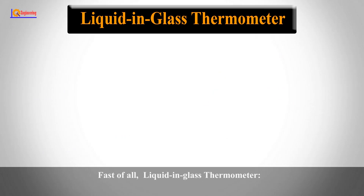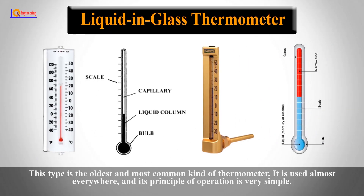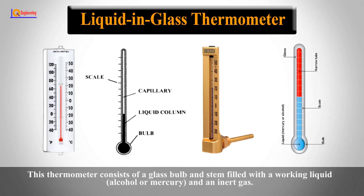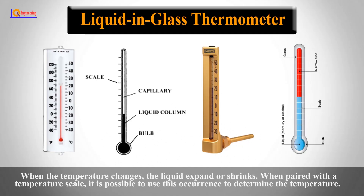First of all, the liquid-in-glass thermometer. This type is the oldest and the most common kind of thermometer, used almost everywhere, and its principle of operation is very simple. It consists of a glass bulb and stem filled with a working liquid and an inert gas. When the temperature changes, the liquid expands or shrinks. When paired with a temperature scale, this is used to determine the temperature.